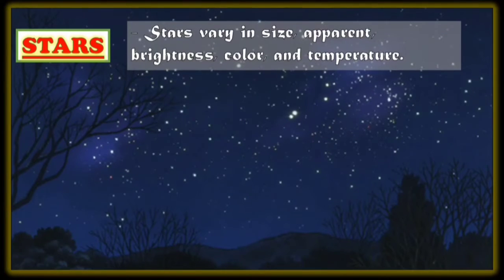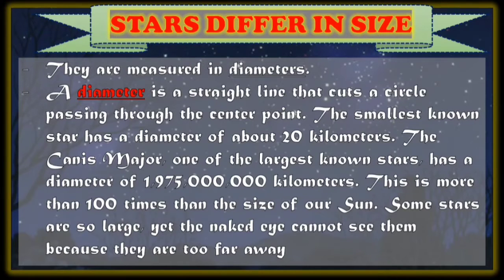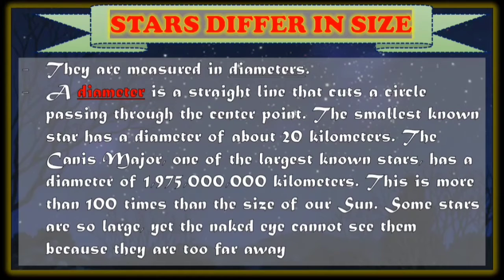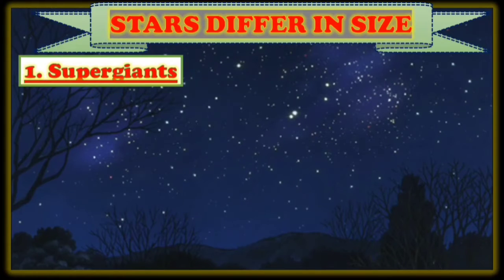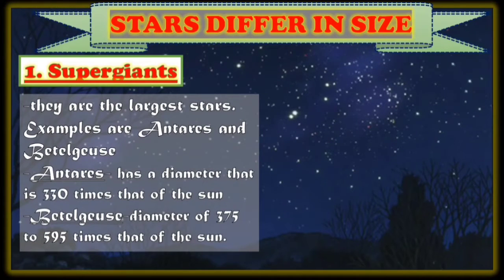Stars vary in size, apparent brightness, color, and temperature. Stars are measured in diameters — a diameter is a straight line that cuts a circle passing through the center point. The smallest known star has a diameter of about 20 kilometers, while the Canis Major, one of the largest known stars, has a diameter of 1,975 billion kilometers, more than 100 times the size of our sun. Some stars are so large, yet the naked eye cannot see them because they are too far away. The first size classification is supergiants — they are the largest stars. Examples are Antares and Betelgeuse.